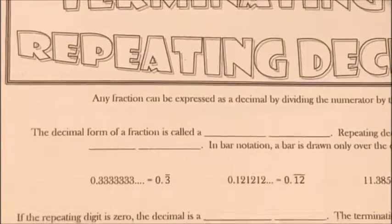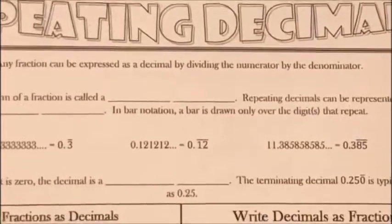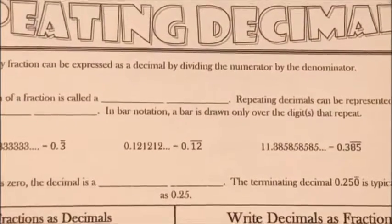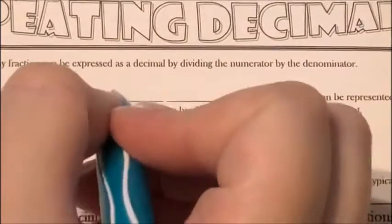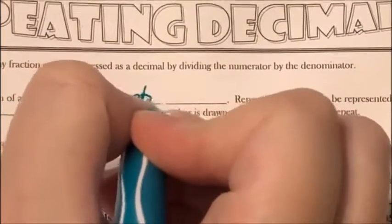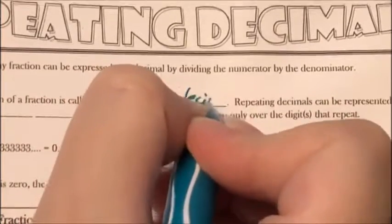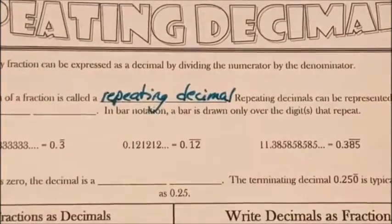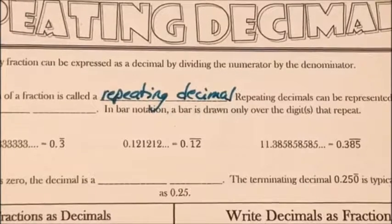The decimal form of a fraction is called a repeating decimal.